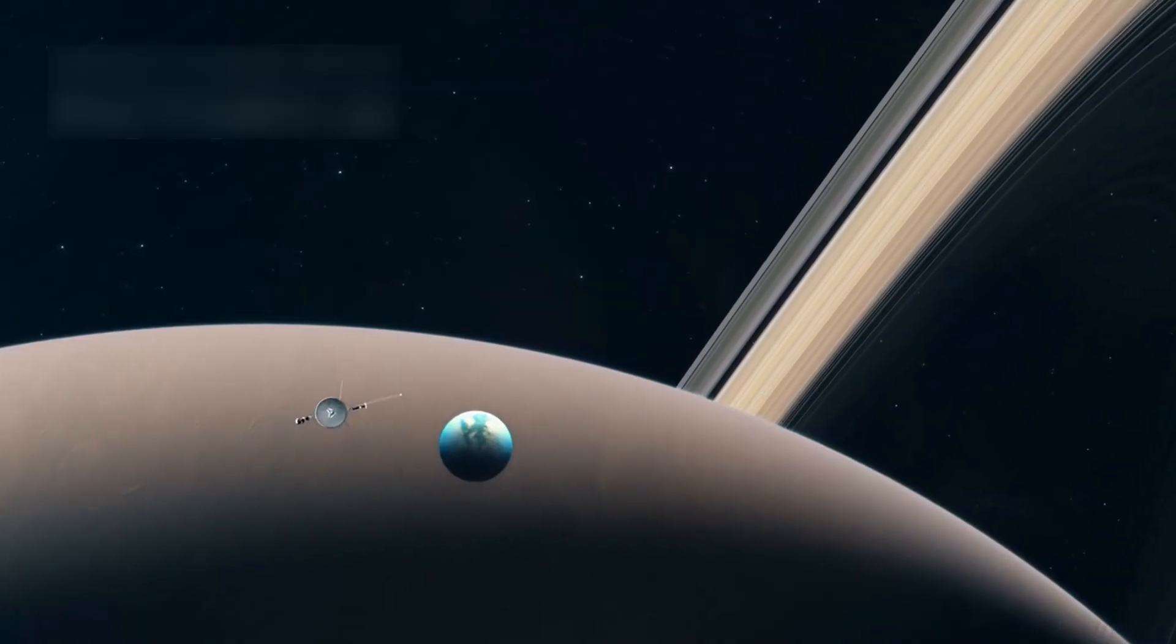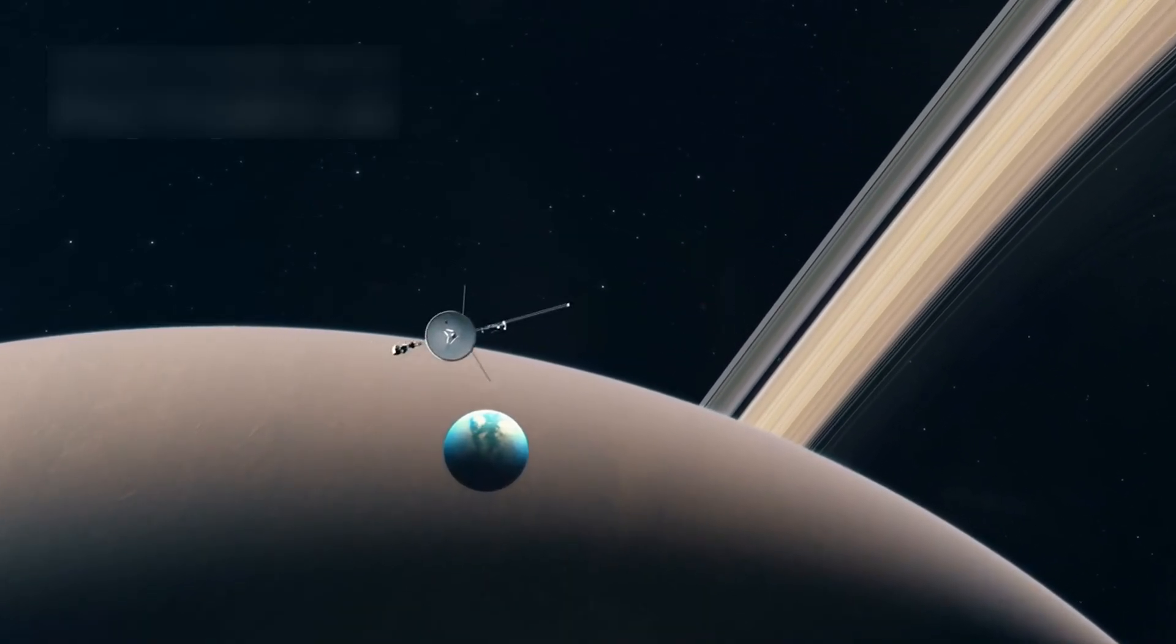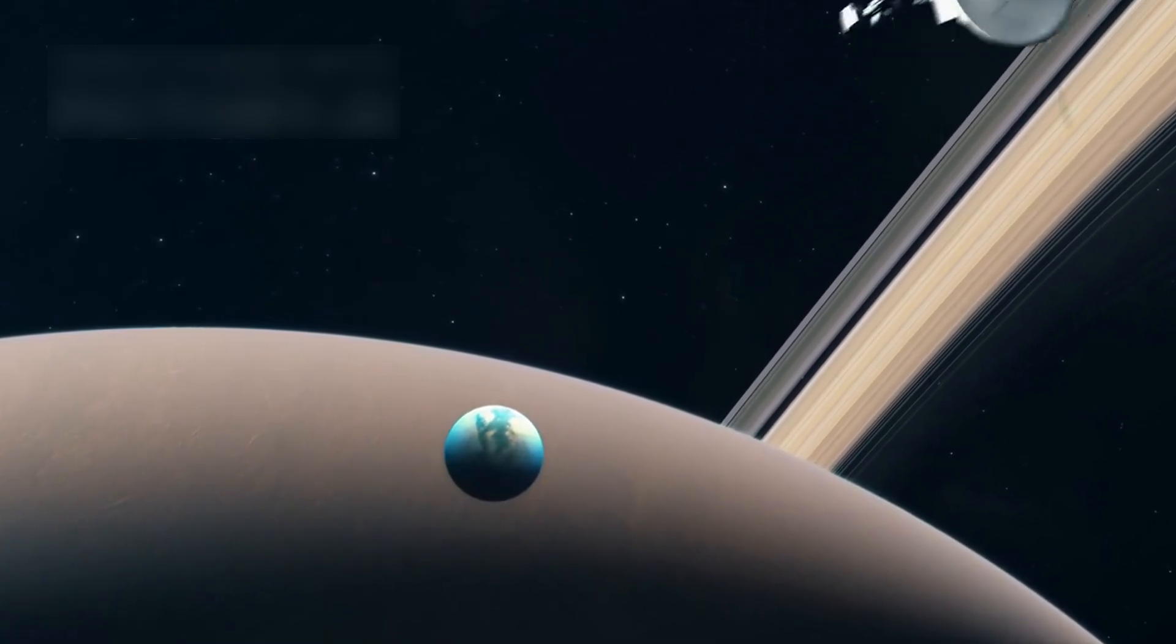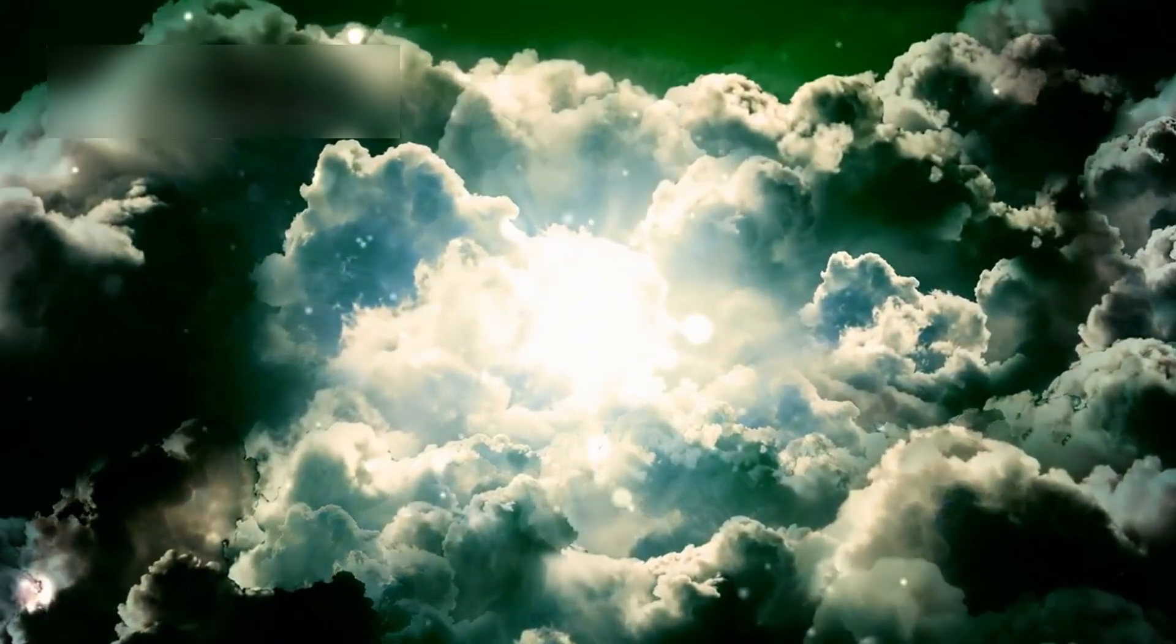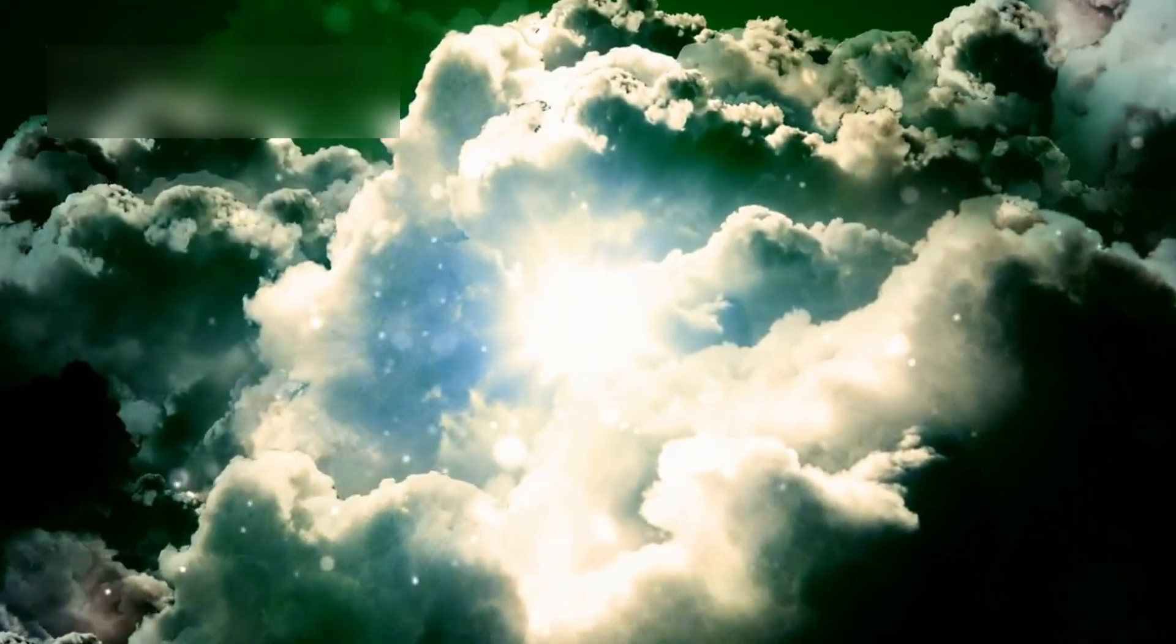Voyager 1, launched in 1977, left the solar system by 2012, going 14 billion miles. Still, it hasn't reached the Oort cloud, a distant icy shell surrounding our system.